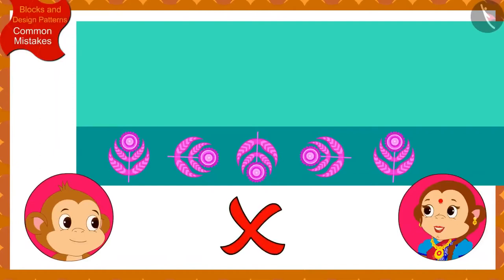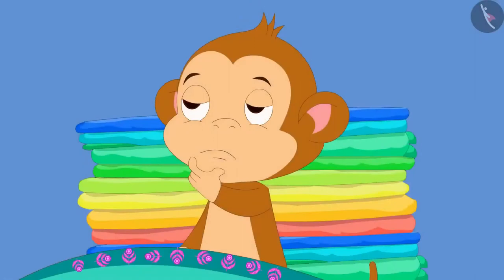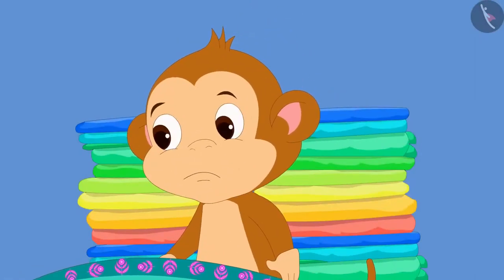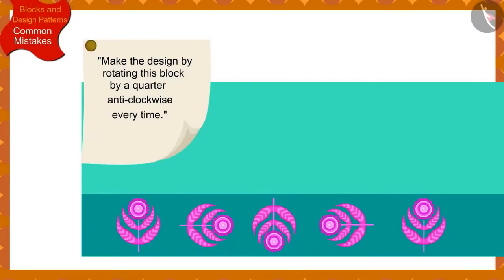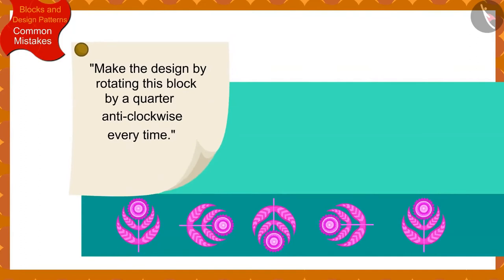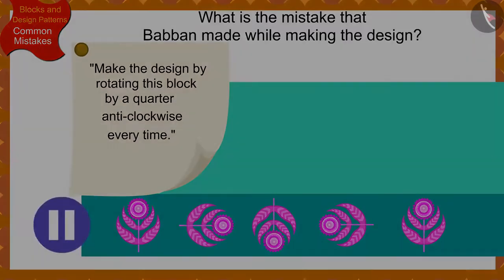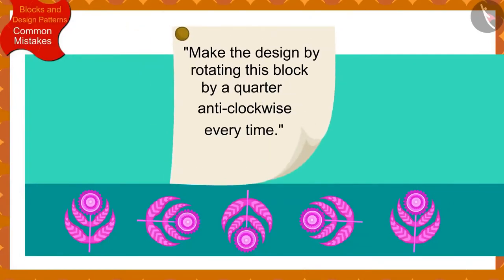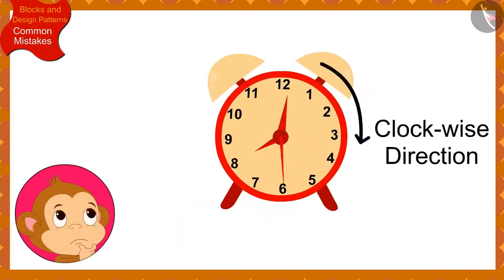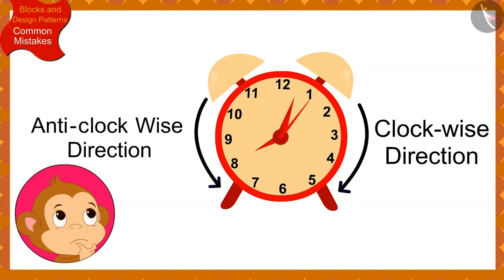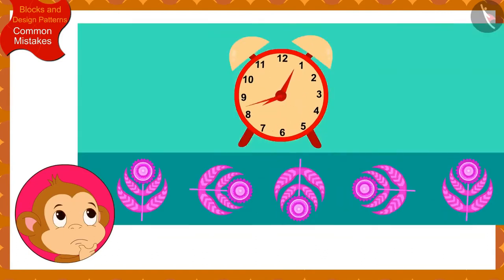Banno told Babban he made the wrong design. Poor Babban could not understand what mistake he made. Children, can you tell by looking at Banno's instructions and Babban's design, what mistake Babban made? You may stop the video and find the answer. Actually, as per Banno's instructions, Babban had to rotate the block by a quarter in the anti-clockwise direction every time. But Babban got confused between clockwise and anti-clockwise directions and accidentally made the pattern by rotating the block a quarter in the clockwise direction every time.